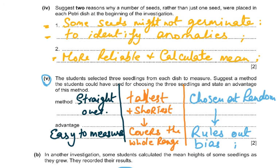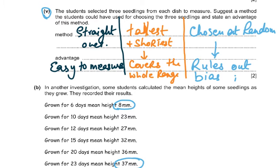Part 5: the students selected three seedlings from each dish to measure. Suggest a method the students could have used for choosing the three seedlings and state an advantage of this method. There were three different possibilities. The first method is they were straight, the ones which were straight. Why? Because it's easy to measure. The ones which are slightly crooked, you can't measure them very correctly. The second point was that they're the tallest and the shortest so that you could cover the whole range. The last one was they're chosen at random, and this rules out bias. This rules out favoritism or rules out bias.